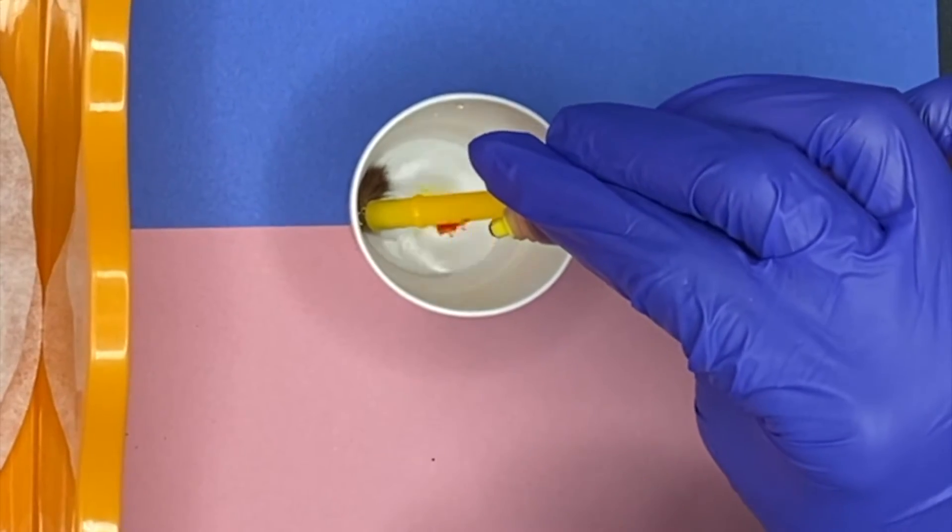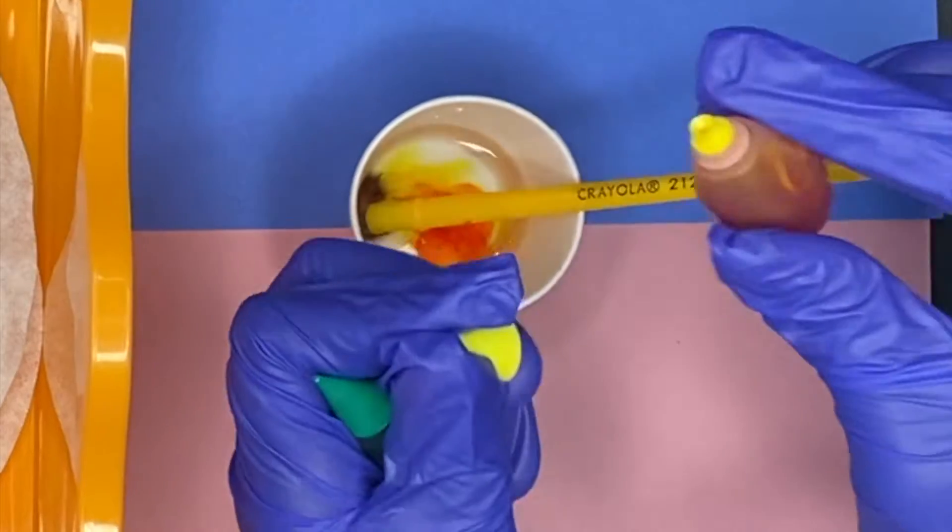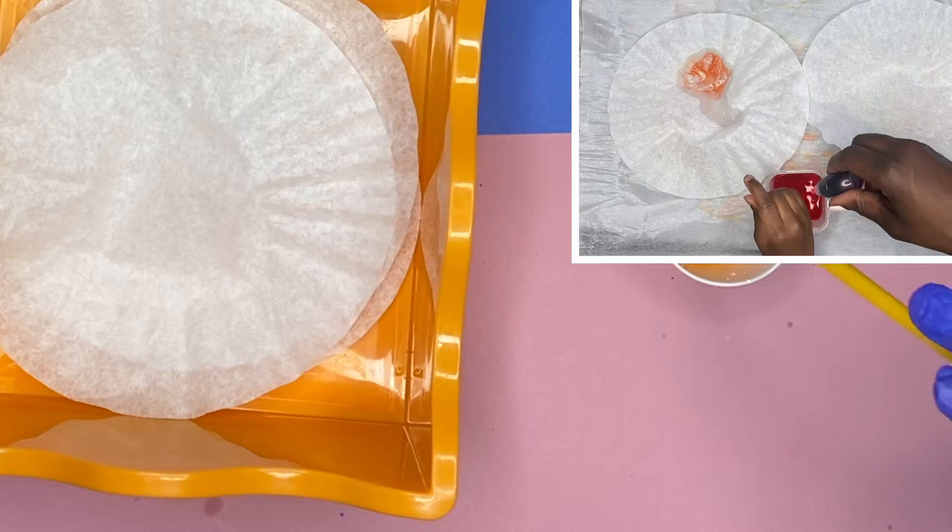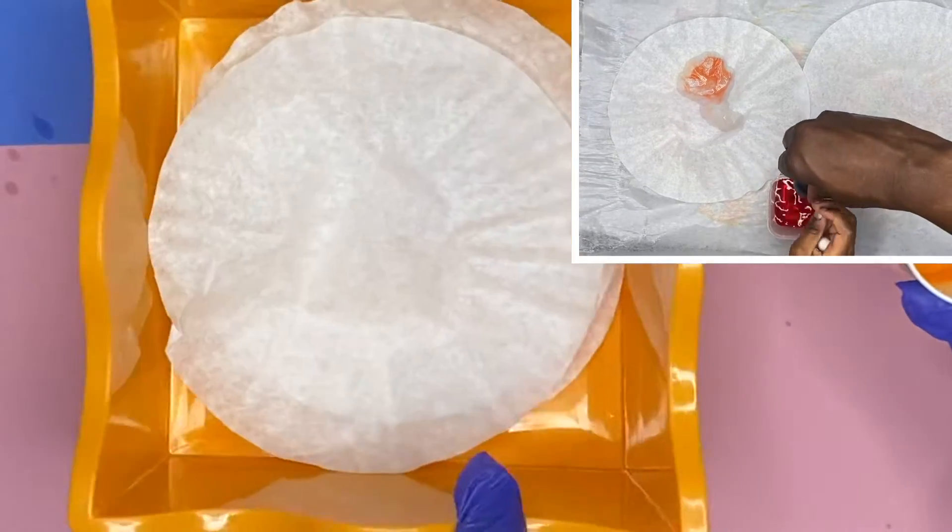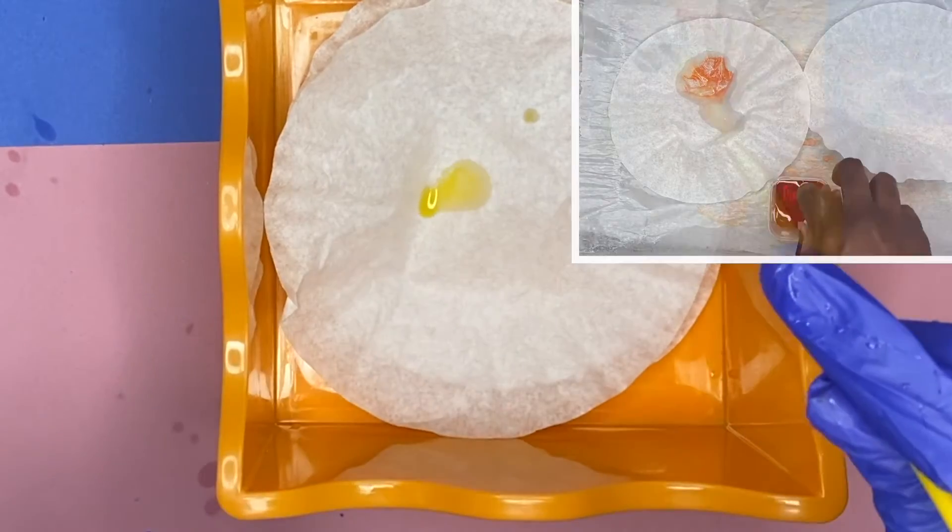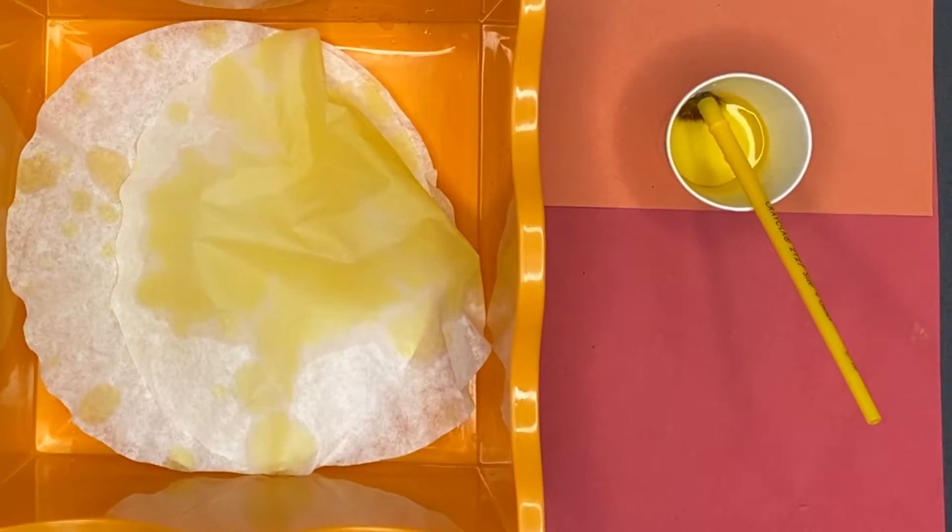And you're going to go ahead and start with the yellow food coloring. Drop about three to four drops in there and mix it up good. And you're supposed to use your dropper to drop the color like you see the picture in the top right onto the filter. But I misplaced mine, so I'm just going to use my brush and drop the color on the filter.